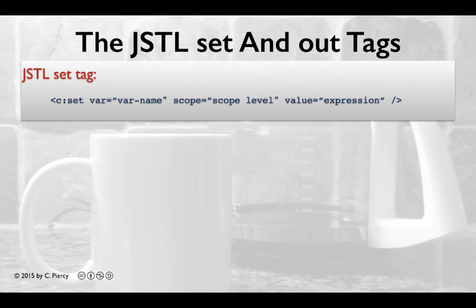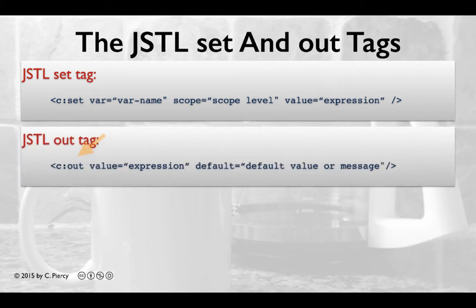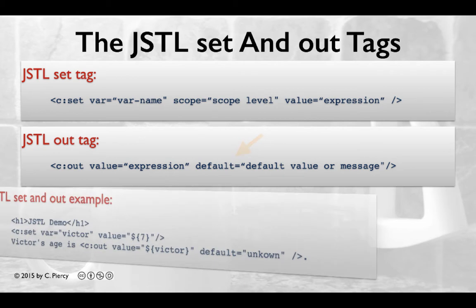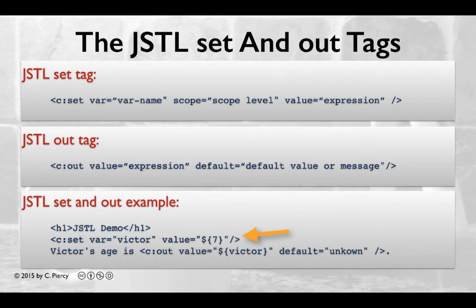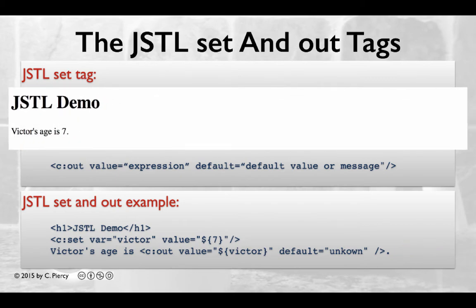The general format for the JSTL set tag is shown here. Note we are including the var parameter which sets the variable name, the scope parameter which sets the scope to any of the levels application, request, page, or session, and a value. The general format of the JSTL out tag is shown here. With this form, we are using the attribute value to set the value we want to print and a default message in case the expression is null. In this example, we can see that we are setting a variable called Victor to a value of 7 using expression language. In the third line, we are printing a message that says Victor's age is, and then printing out the value using the JSTL out tag. The resulting view is shown here.